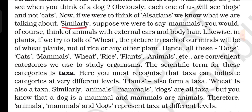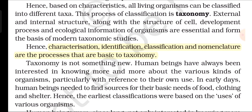Based on characteristics, all living organisms can be classified into different taxa. This process of classification is taxonomy. External and internal structure, along with the structure of development processes and ecological information of organisms, are essential and form the basis of modern taxonomic studies. Hence, characterization, identification, classification, and nomenclature are the processes that are basic to taxonomy. Taxonomy is not something new — human beings have always been interested in knowing more about the various kinds of organisms, particularly with reference to their own use. In early days, human beings needed to find sources for their basic needs of food, clothing, and shelter, and hence the earliest classifications were based on the uses of various organisms.